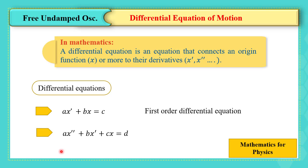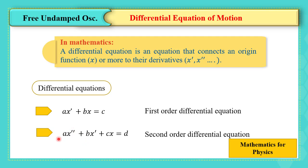Another example: ax double prime plus bx prime plus cx equals to d. Here we have in the same equation x — the original function — its derivatives x prime and x double prime. Because we have the second derivative, we call it a second-order differential equation.